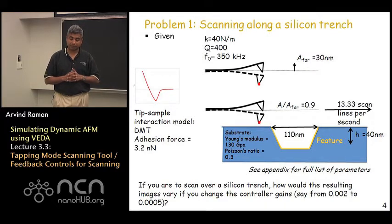Spring constant 40 Newton per meter, Q factor, natural frequency 350 kilohertz and the drive frequency is tuned to be exactly at 350 kilohertz. The amplitude far from the sample is 30 nanometers.